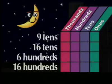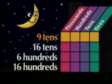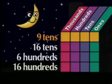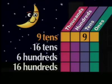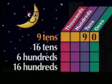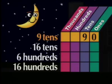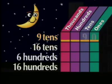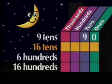To write this tens number, we write the number and how many zeros? The number and one zero. How do you say this number? Ninety.